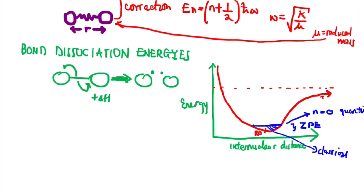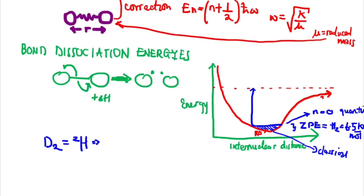This gap is called the zero point energy of a molecule. This value is unique — for example, hydrogen gas H₂ has a zero point energy of 6.5 kcal/mol, which is completely different from its isotope D₂, deuterium, which has a mass number of two — one neutron and one proton. The energy gap from the top of the well down to the n equals zero level is called the experimental dissociation energy.